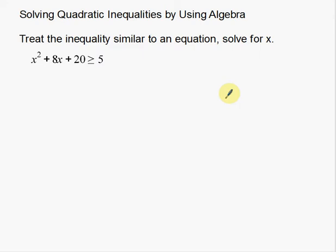A lot of this is going to seem familiar, and some of it may be new. We want to treat the inequality similar to an equation and solve for x. So I'm going to rewrite this as x squared plus 8x plus 20 equals 5 — using an equal symbol instead of the inequality symbol to make it easier to solve.